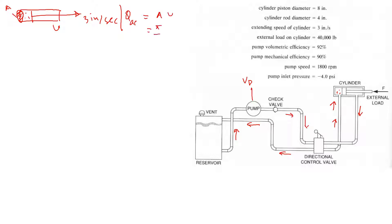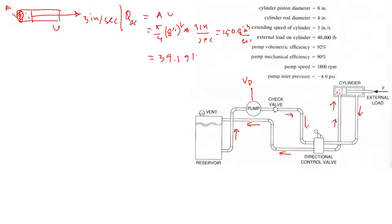The area is (π/4) × D², where D is 8 inches, multiplied by the speed of 3 inches per second. Solving this gives 150.8 in³/s. Converting to gallons per minute, that equals 39.2 GPM. So the actual flow rate is 39.2 GPM.